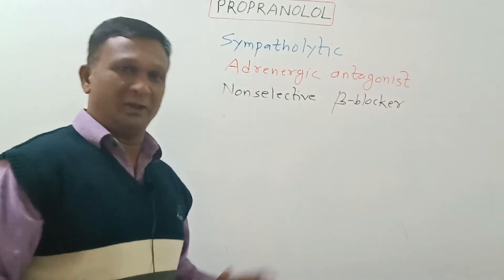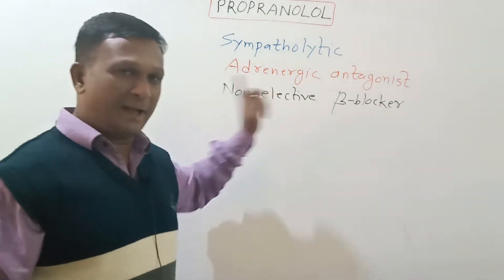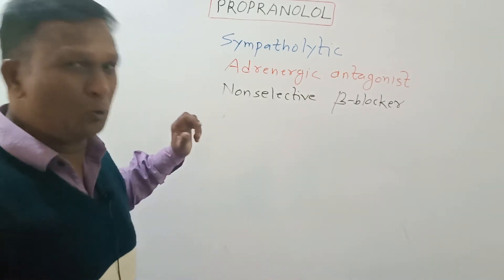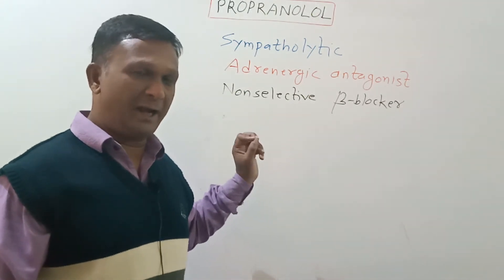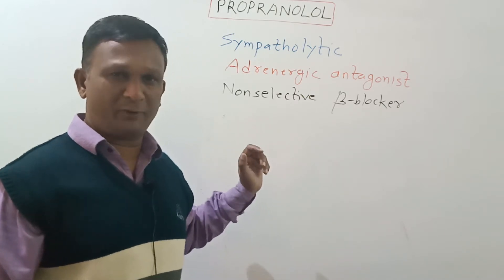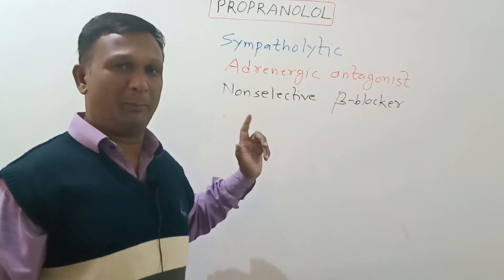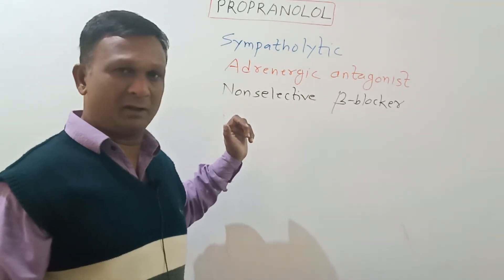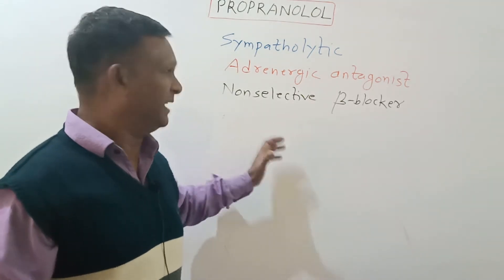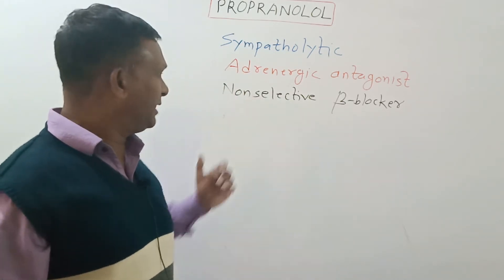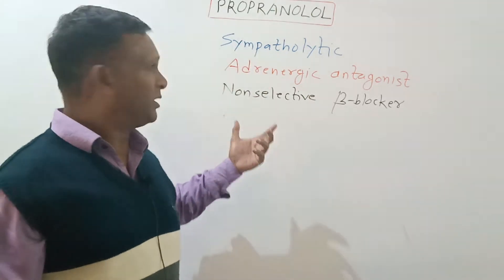So this drug antagonizes the action of the neurotransmitters adrenaline and noradrenaline, which are also called epinephrine and norepinephrine, on the beta receptors of the cardiac cells. Though it antagonizes the action of adrenaline and noradrenaline, this drug propranolol...